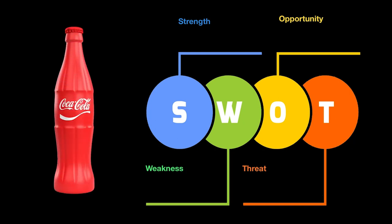Let's try to figure out what the SWOT analysis of Coca-Cola would look like. When we talk about strengths, Coca-Cola is a brand people either love or hate — they'll stick to it and never drink Pepsi, or vice versa. So customer loyalty is one of the key strengths of Coca-Cola. They also have excellent marketing abilities.